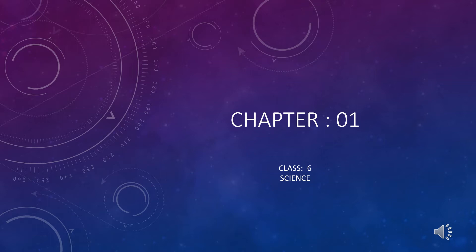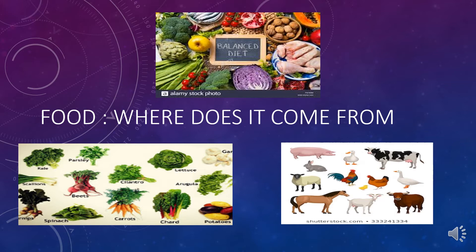Before moving to the topic, let me ask a simple question: what did you have in your breakfast? The answers would vary because you are all unique. There are varieties of food like dosa, chapati, vegetables, chicken curry, etc. But if you observe your breakfast list, you will find there are only two sources — either plants or animals. The literal meaning of this chapter is: food means what we eat and where it comes from, that is, its sources.